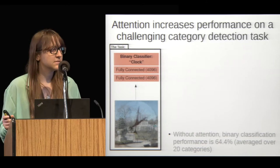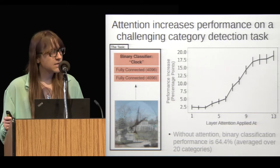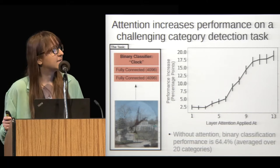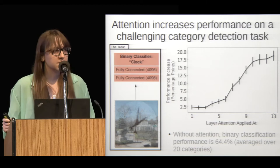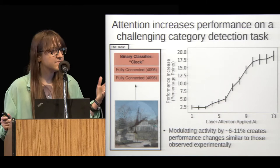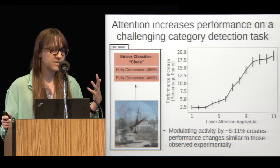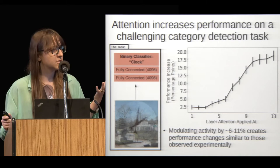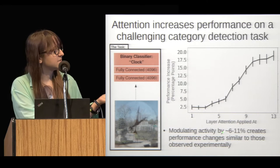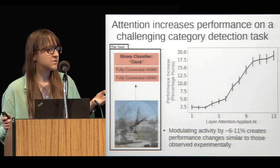What happens when attention is applied? Applying attention at different layers individually leads to substantial increases in performance, particularly if attention is applied at the last layers of the network. Applying attention at the 13th convolutional layer gives an increase of 20 percentage points in performance. The strength of attention is a free parameter in the model, and comparing the performance enhancements observed in experimental data, the magnitude of performance increase can be achieved in the model using modulation of firing rates of around 6% to 11% — which is in line with neural modulations observed in the data.